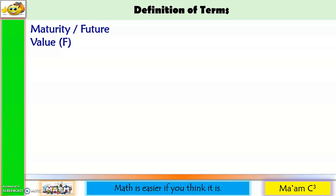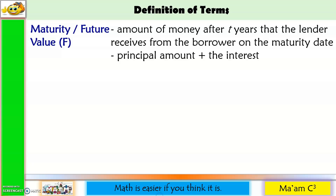First, maturity or future value, denoted by capital letter F, is the amount of money after a certain period that the lender receives from the borrower on the maturity date. Another way to define it: it is the principal amount plus the interest.